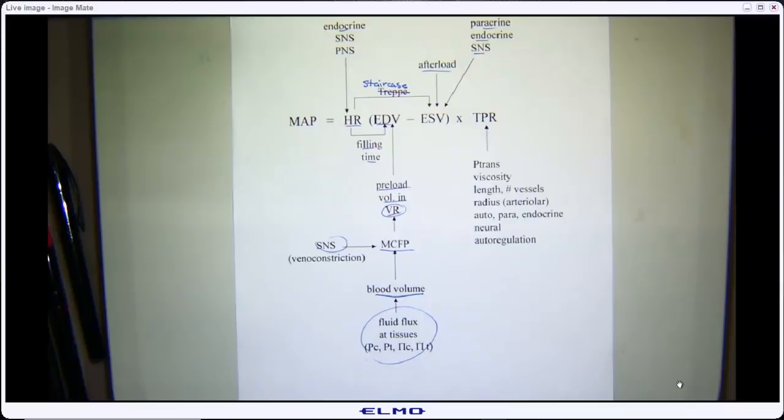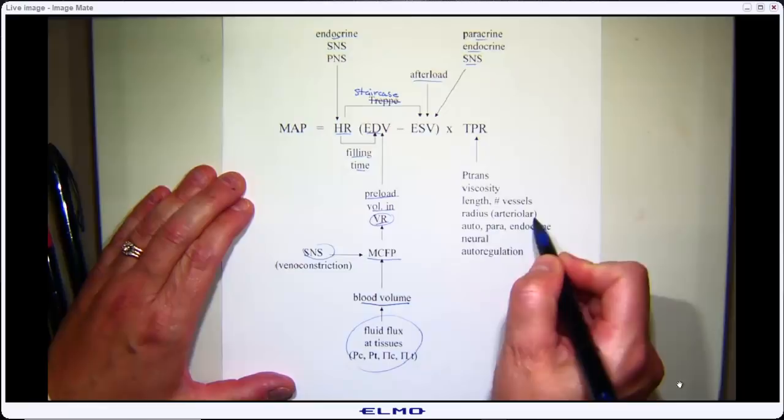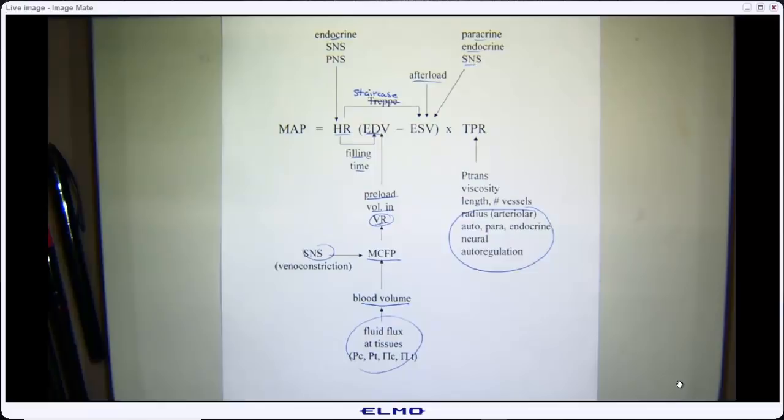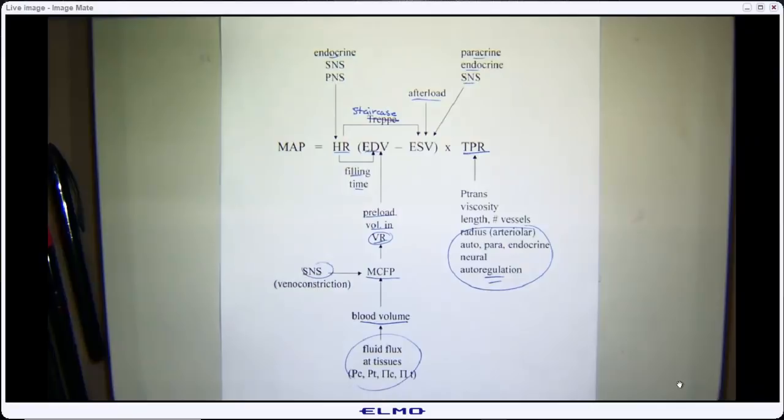Heart rate also affects end-diastolic volume through filling time and preload — volume in. We started thinking about venous return as that preload, which messes with end-diastolic volume. We can change venous return by changing mean circulatory filling pressure through SNS and venoconstriction. We can also influence preload and mean circulatory filling pressure by messing with blood volume — we were doing that by fluxing fluid at the level of the capillaries. For total peripheral resistance, when we changed radius through autocrine, paracrine, endocrine, neural means, or autoregulation and the myogenic response, every time we change radius of a large number of vascular beds we're changing total peripheral resistance, which messes with mean arterial pressure.